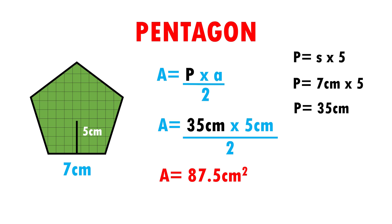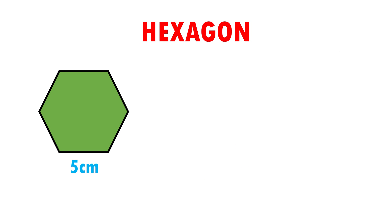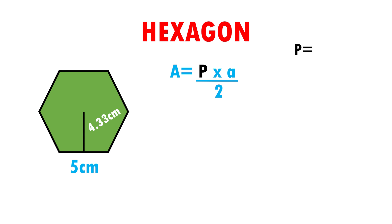Very easy, right? Now we are going to see our last example. Here I have a hexagon that measures 5 cm per side and 4.33 cm of apothem. The formula to calculate the area of a hexagon is area is equal to perimeter times apothem divided by 2. First, we have to calculate the perimeter. Perimeter is equal to side times 6 because there are 6 sides of the hexagon. The perimeter is equal to 5 cm times 6 sides, which gives 30 cm.